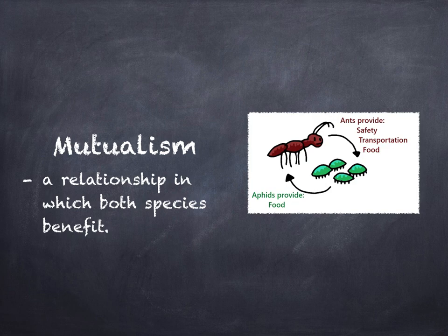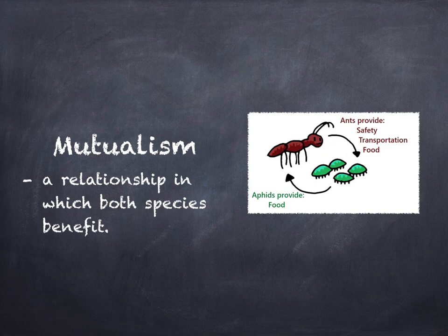In some relationships, two species may depend on one another. This is true for some species of Acacia trees and stinging ants in South America. The stinging ants nest only in the Acacia tree, whose thorns discourage the ants' predators. The tree also provides the ants' only food. The ants in turn attack other animals that approach the tree and clear competing plants away from the base of the tree. This relationship is an example of mutualism — a relationship in which both species benefit.